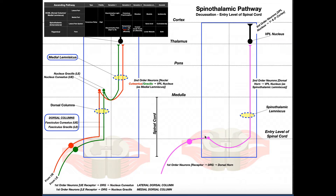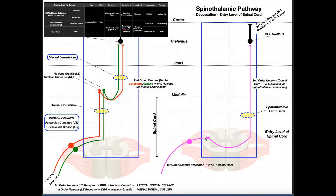The first-order neuron brings sensory information from a receptor in the periphery into the spinal cord. Much like we saw in the DCML pathway, this is a pseudo-unipolar neuron, meaning the cell body has a distal axonal extension and a proximal axonal extension relative to the spinal cord. The distal axon brings information from a sensory receptor to the cell bodies, which are found within the dorsal root ganglion. The proximal axonal extension then projects from those cell bodies in the dorsal root ganglion into the spinal cord.